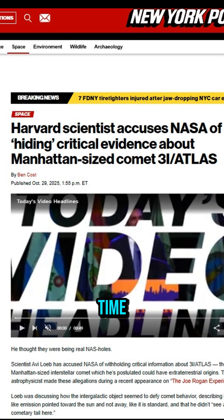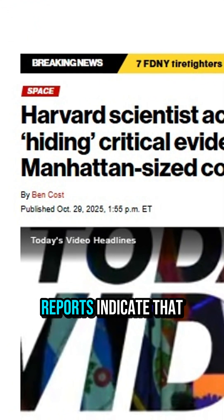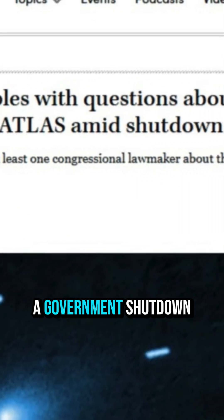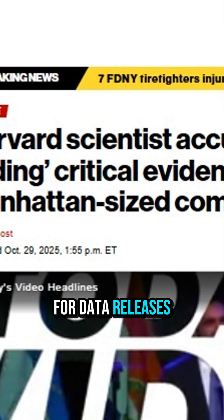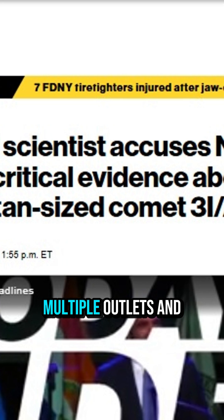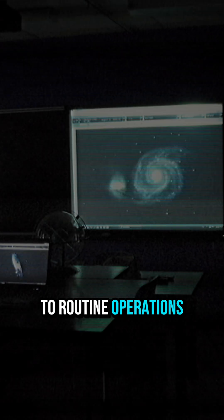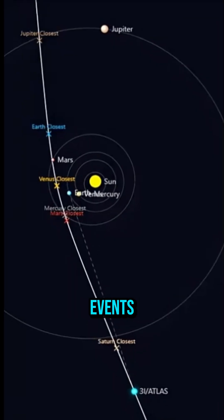At the same time, a political complication has amplified public unease. Reports indicate that parts of the U.S. federal apparatus were affected by a government shutdown, complicating normal channels for data releases and briefings. Multiple outlets and insiders have described disruptions to routine operations even as federal staff continue to monitor high-priority space events.